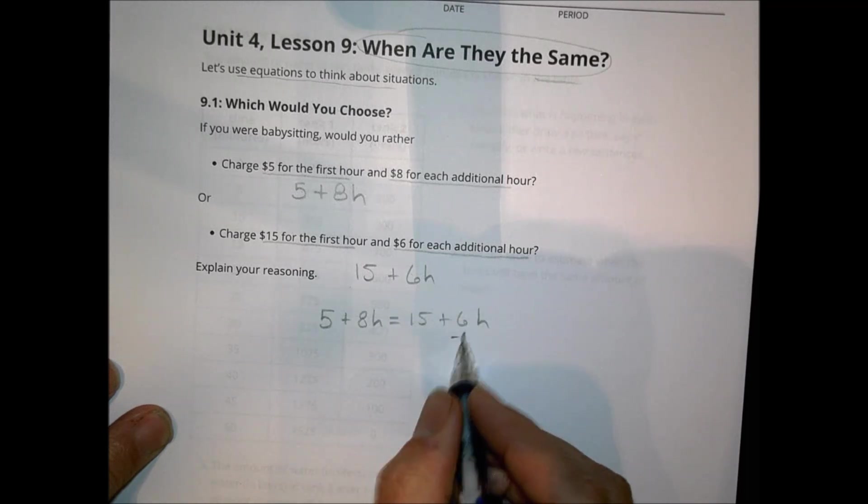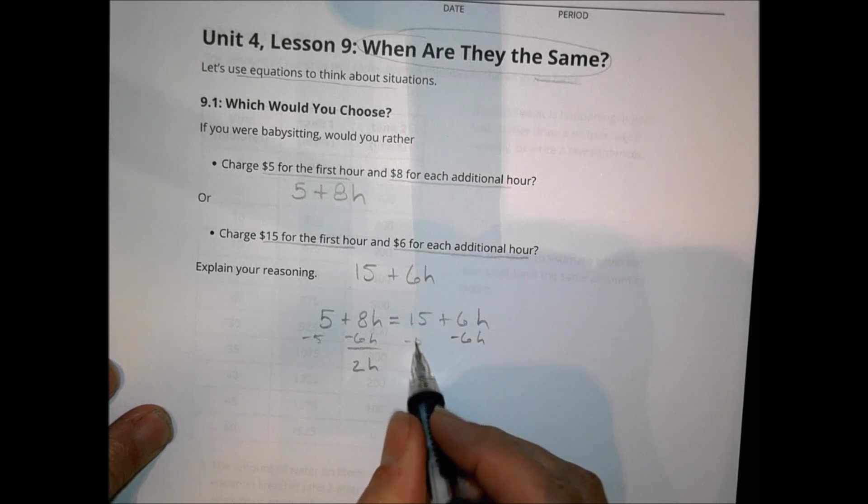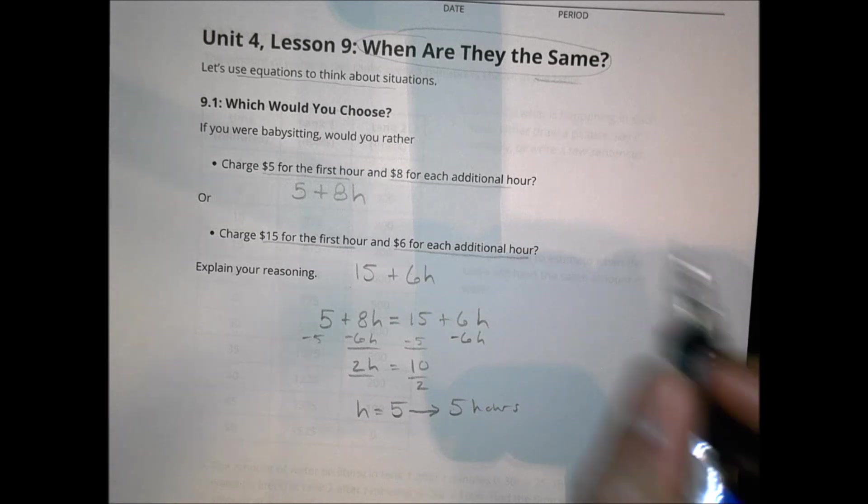To do that, we're going to subtract 6H from this side. So we have 2H over here, and we can subtract 5 from this side, and we have 10 over here. We divide both sides by 2, and we find out that H equals 5. And what that means is that at 5 hours into the job, they're going to have the same amount of money. So once they worked 5 hours, they're going to have an equal amount of money.